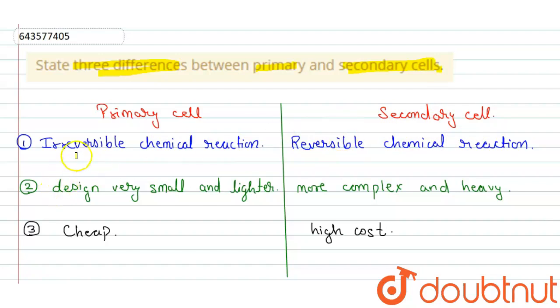And the second point: in primary cell, the design is very small and lighter. The primary cells are very small and lighter in design, whereas in the secondary cell, the design is more complex and heavy.